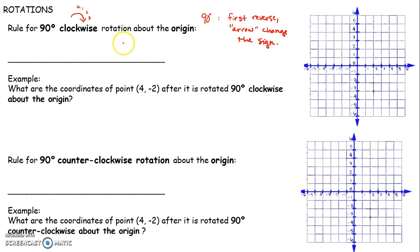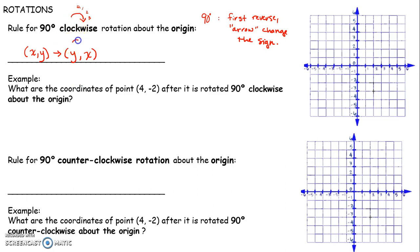Ms. Pearson gave me that little trick several years ago and it just works for me. So for 90 degrees clockwise, I first reverse the order I write my x and y coordinates — x, y becomes y, x. Then arrow, change the sign. I do an arrow going clockwise above, and that tells me which coordinate's sign I change.